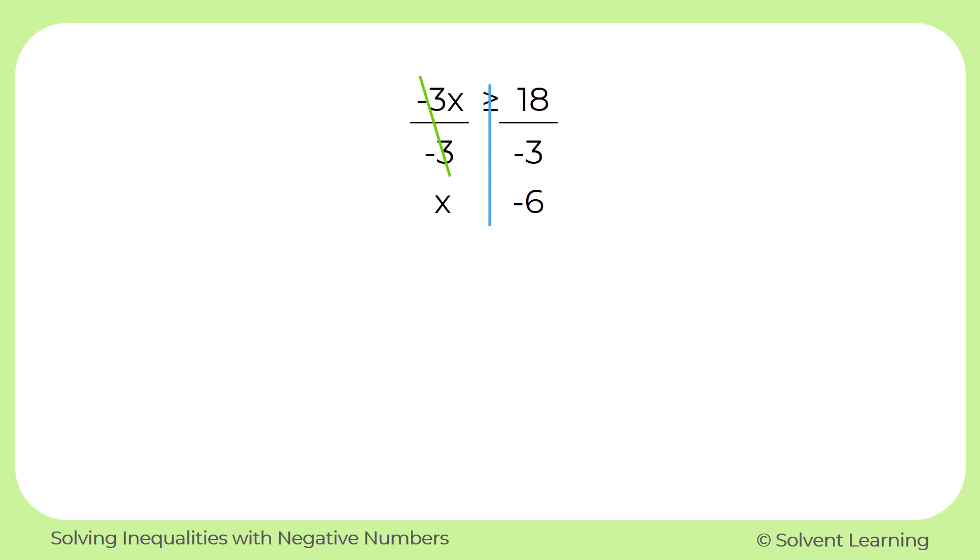Now we have to decide what symbol goes in the middle. We learned from our last lesson that whenever we're multiplying or dividing by a negative number, we have to flip the inequality sign. And since we had to divide by negative 3 in this problem, that means we do have to flip our sign. So we started with the greater than or equal to symbol, and now it flips to the other direction and becomes a less than or equal to.